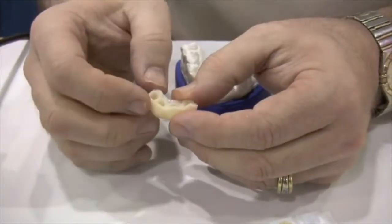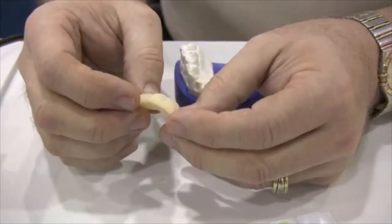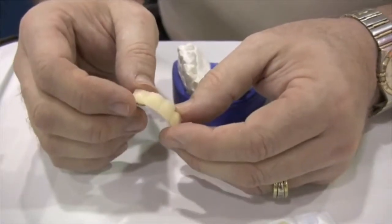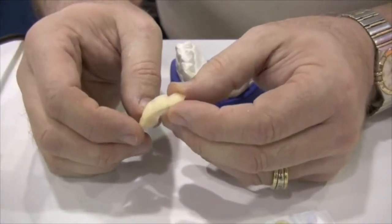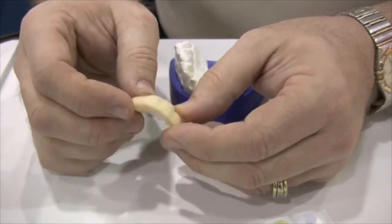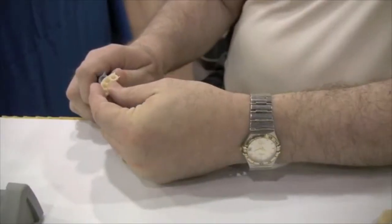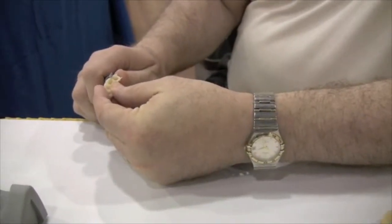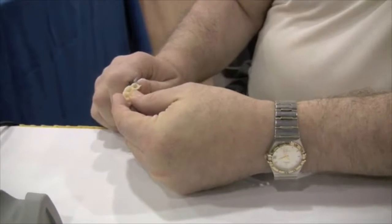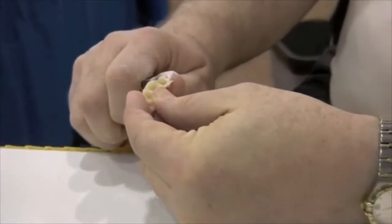Our next step is going to be to remove some of the excess around the margins and do a little bit of carving. We've got pretty decent detail from our preoperative model, so there should not be too much carving to do. I'm going to start and just remove excess around the margins.